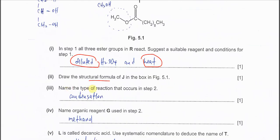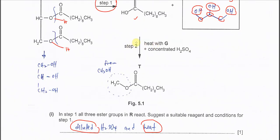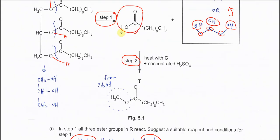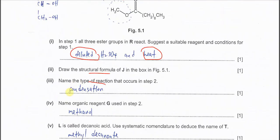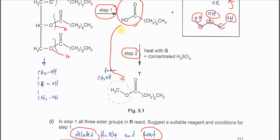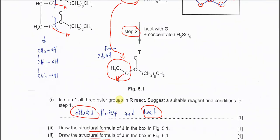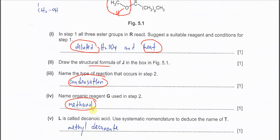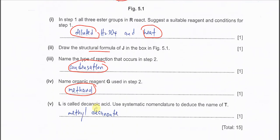For part three, name the type of reaction in step two. Step two converts the carboxylic acid to an ester, so the reaction type is condensation. To name the organic reagent G used in step two: since the ester is formed from the carboxylic acid, the other component is contributed by an alcohol. Adding one H to the relevant group shows it is methanol.